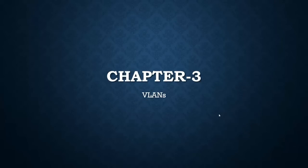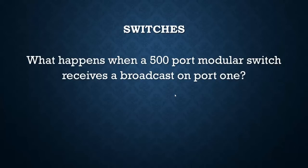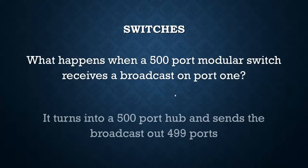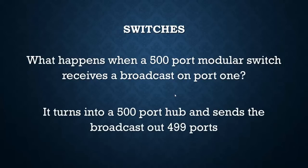Alright folks, today we're going to have a talk about Chapter 3 VLANs. Ask yourself, what happens when you've got a 500-port modular switch and a broadcast happens on one port? Well, it turns into a 500-port hub and it sends the broadcast out the other 499 ports.